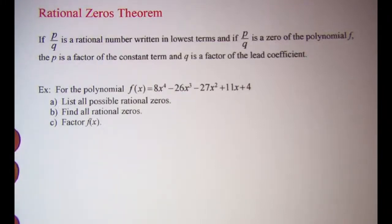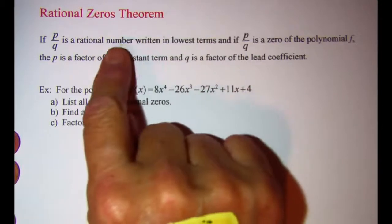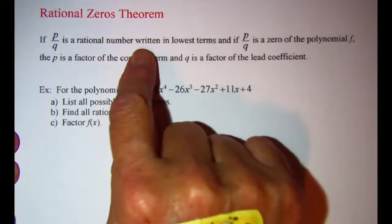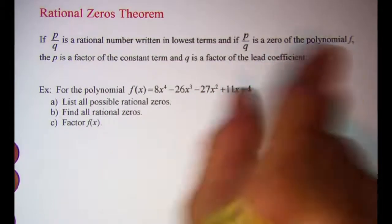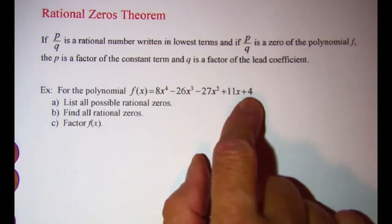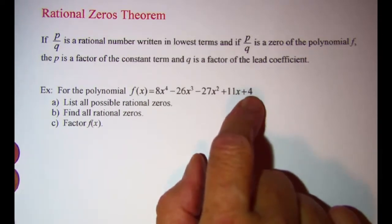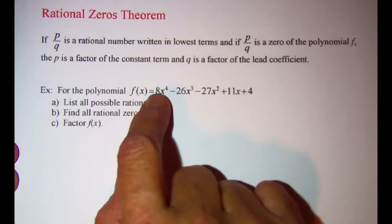In this video we will be using the rational zeros theorem to list possible rational zeros, then use synthetic division with those possible zeros to find the actual rational zeros of our function, and then factor the function using those zeros. The rational zeros theorem says that if P over Q is a rational number written in lowest terms and P over Q is a zero of the function, then P is a factor of the constant term and Q is a factor of the lead coefficient.